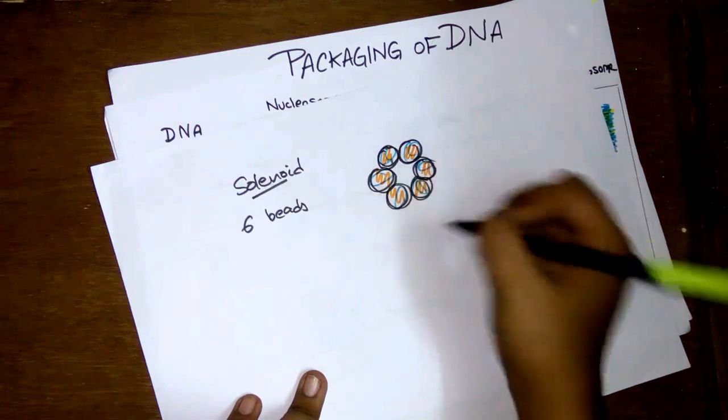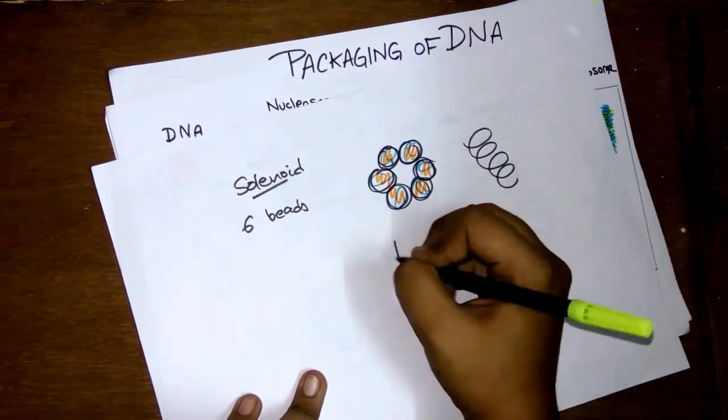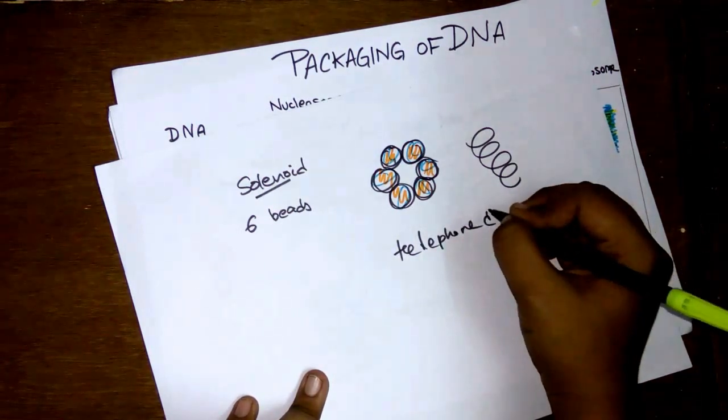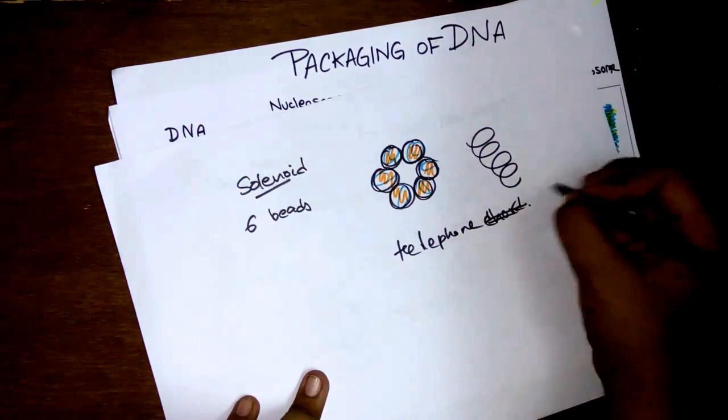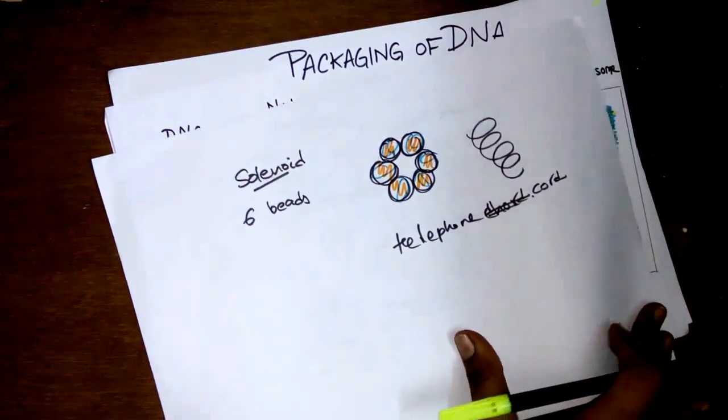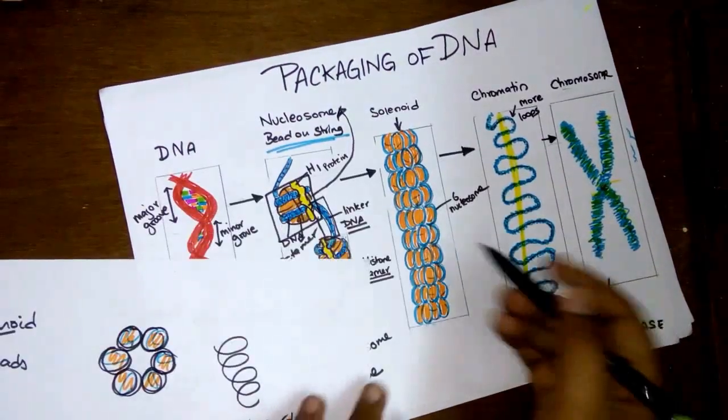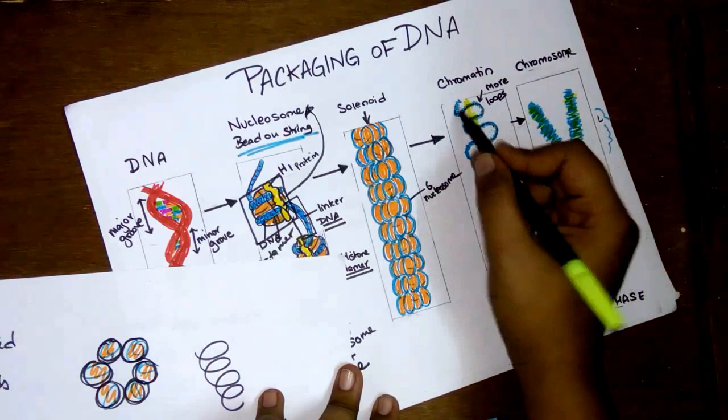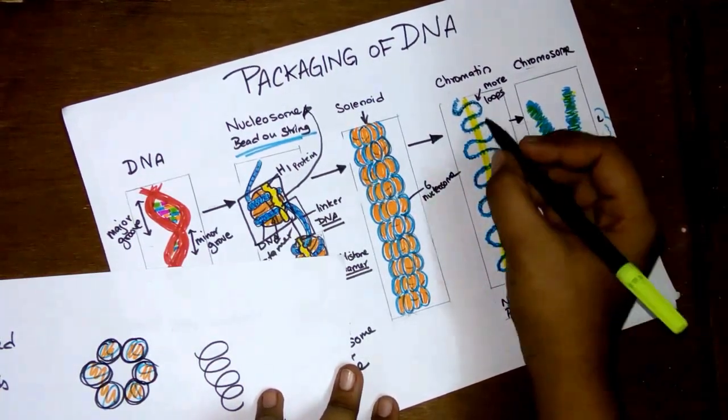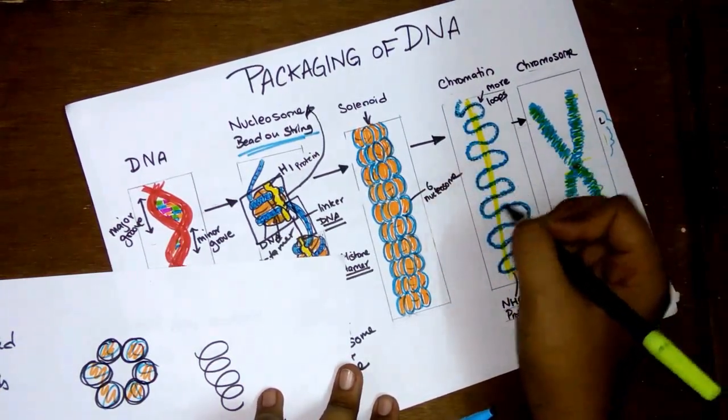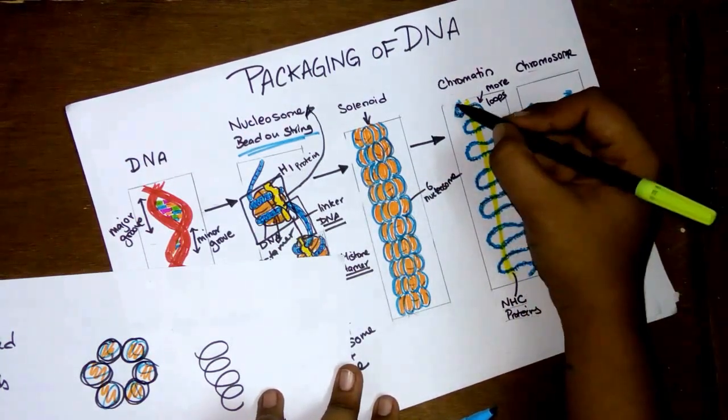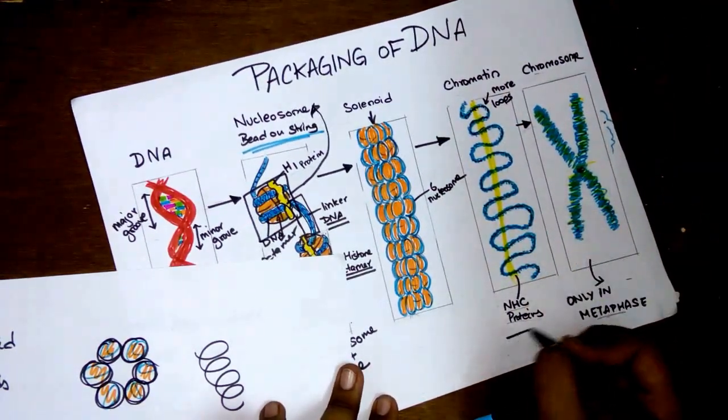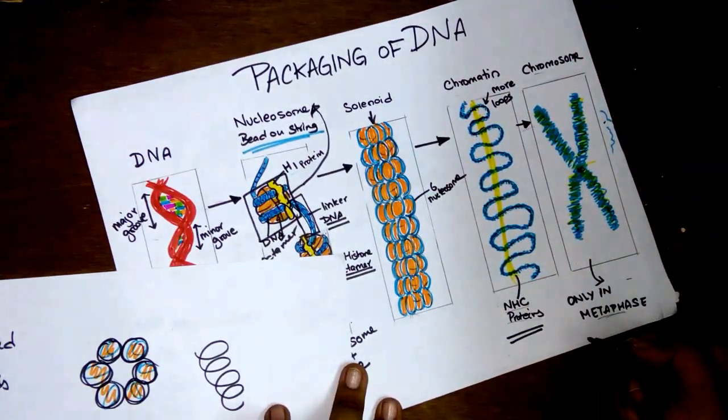The solenoid has around six nucleosomes and it keeps going like a spiral and it looks a lot like a telephone cord. After forming this telephone cord-like structure, this thing goes and forms the chromatin. A chromatin is formed by making loops like this with the solenoid fiber. This yellow color structure you can see here is the non-histone chromosomal protein.